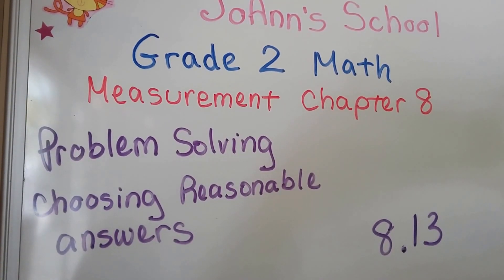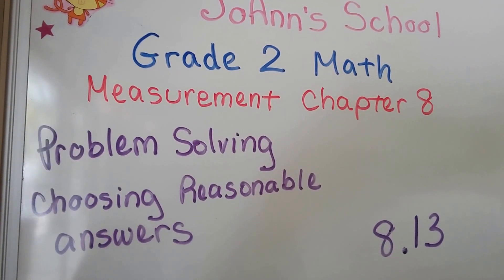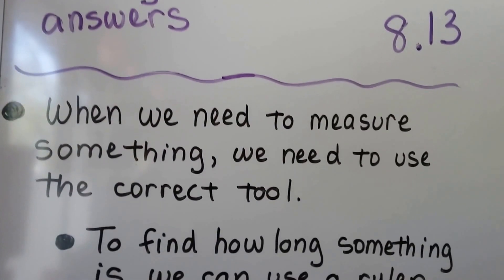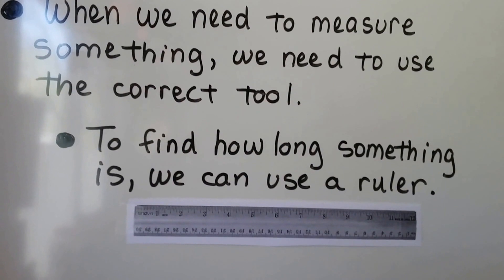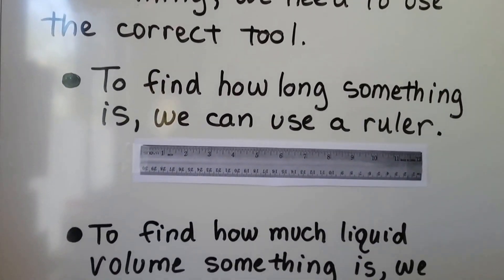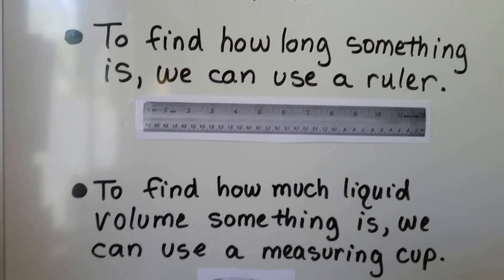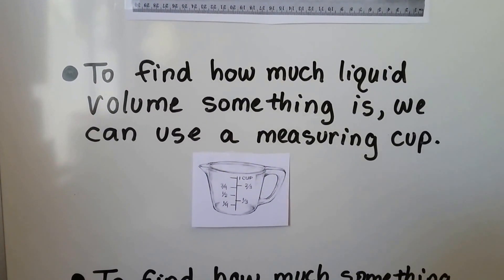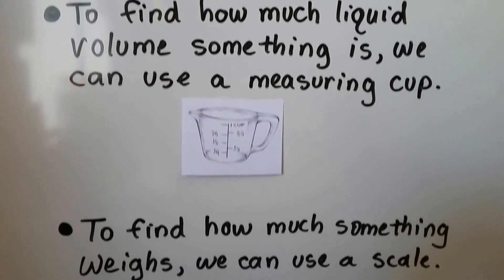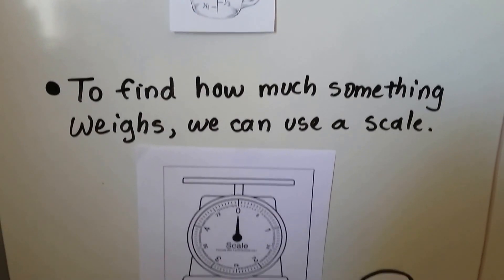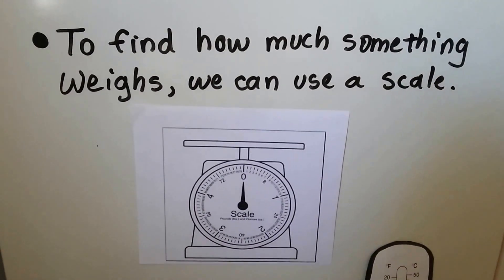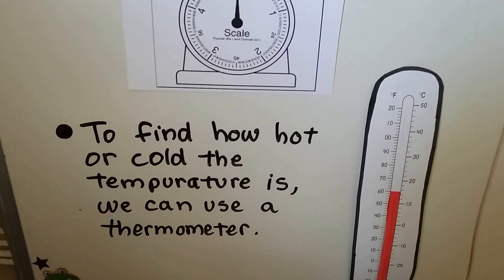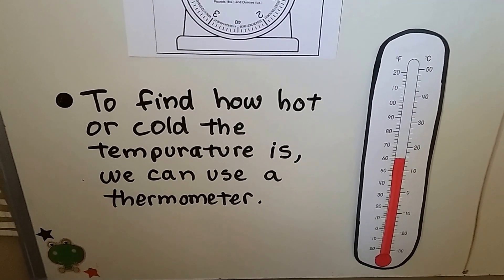Problem Solving: Choosing Reasonable Answers, Lesson 8.13. When we need to measure something, we need to use the correct tool. To find how long something is, we can use a ruler. To find how much liquid volume something is, we can use a measuring cup. To find how much something weighs, we can use a scale. And to find how hot or cold the temperature is, we can use a thermometer.